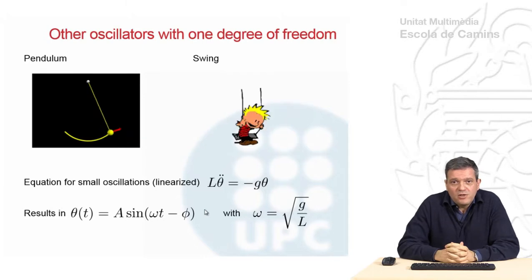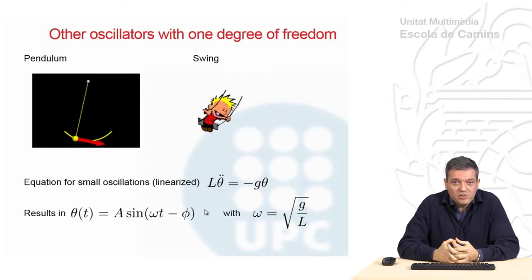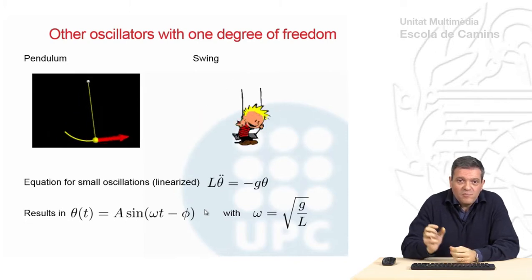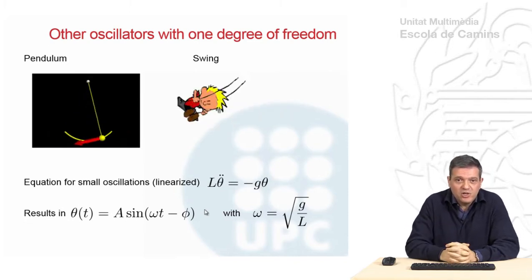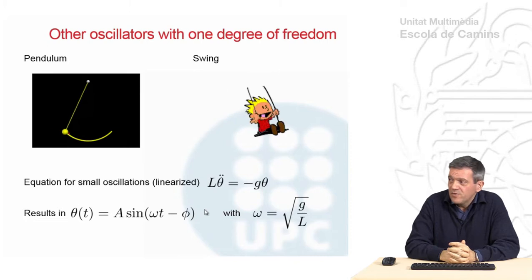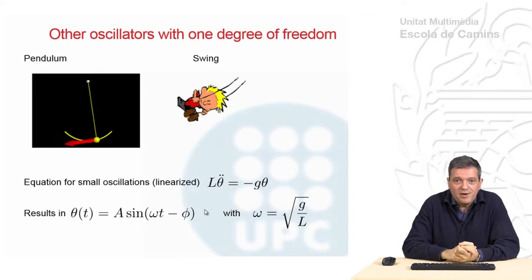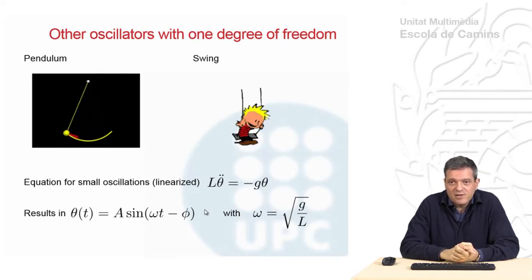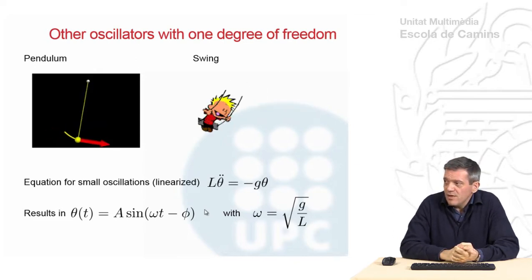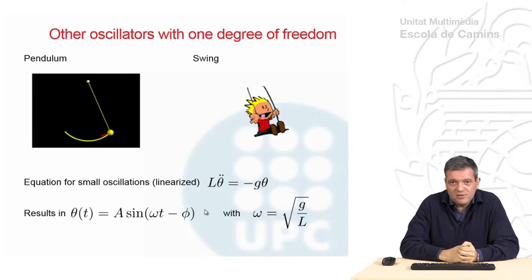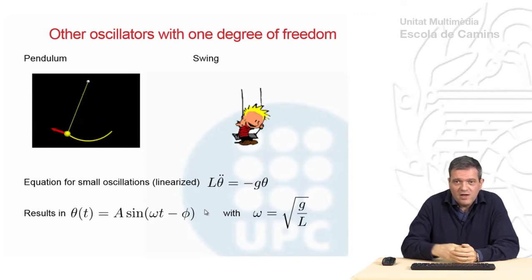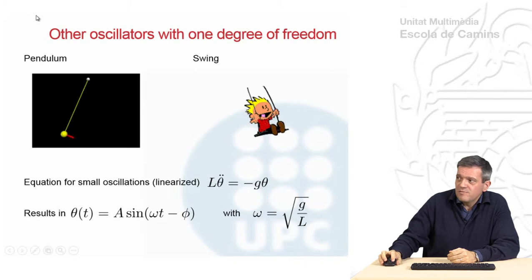There are other one-dimensional oscillators. A swing or a pendulum is also an oscillator if you keep in the small oscillations and then the model is linear. You have exactly the same equation as for the spring and mass system. And of course, you get exactly the same solution. So you have the same ideas behind.